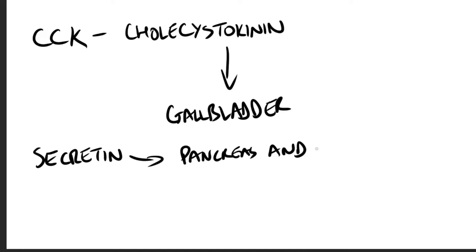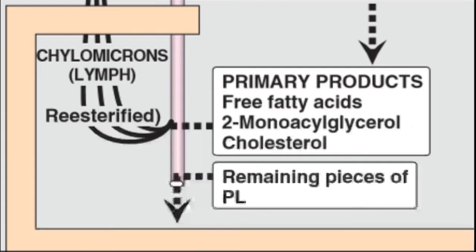What does this do? It helps neutralize the pH of the contents, bringing them to the appropriate pH for the digestive activity by the pancreatic enzymes, which would otherwise not function if the pH was the same as that of the gastric mucosa. All right, we're done with digestion. So our primary products are free fatty acids, two monoacylglycerol, cholesterol, and some remaining pieces of phospholipids.